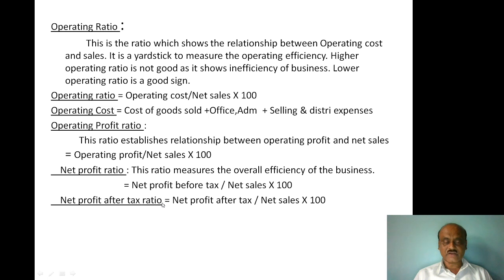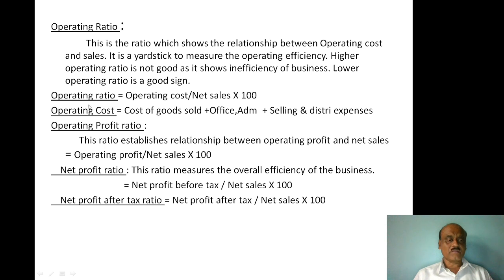Net Profit After Tax Ratio is calculated as: Net Profit After Tax divided by Net Sales, multiplied by 100. So we have: Operating Ratio, Operating Profit Ratio, Net Profit Ratio, and Net Profit After Tax Ratio.